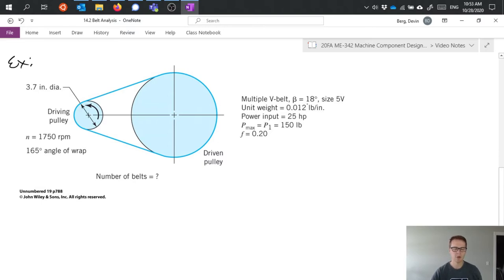We're using V belts with a beta angle of 18 degrees, a size standard given is 5V, the unit weight, the power that we want in, and the maximum tension that we can support with our belt, and a friction coefficient of 0.2.